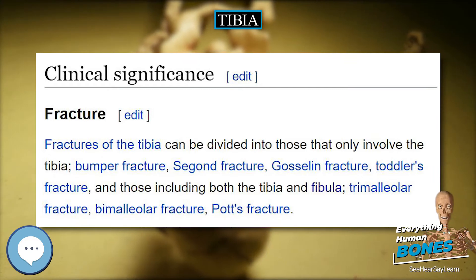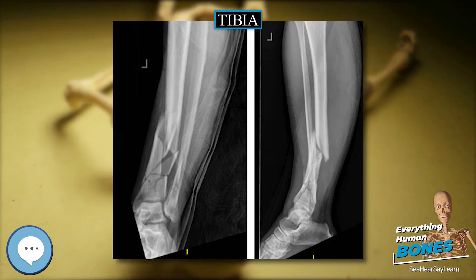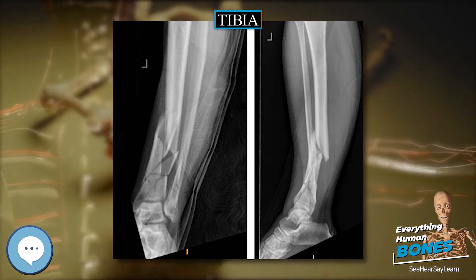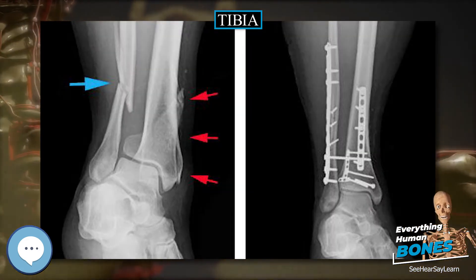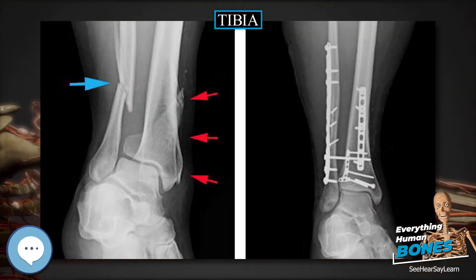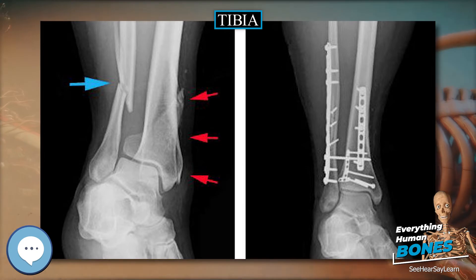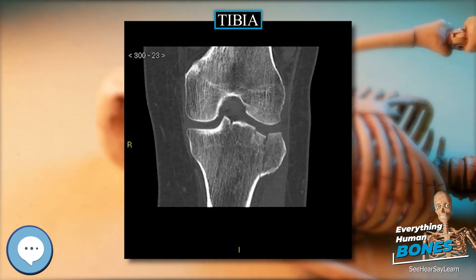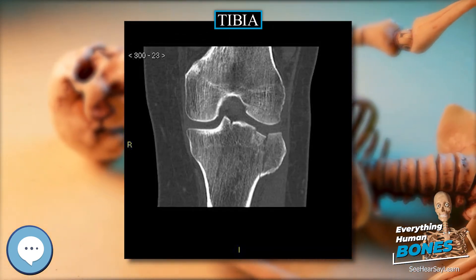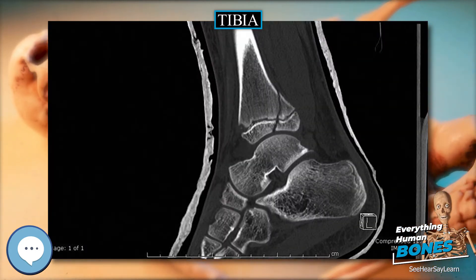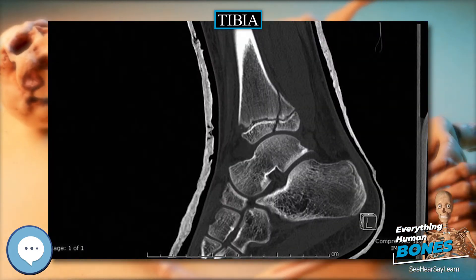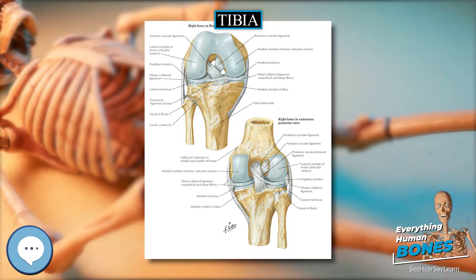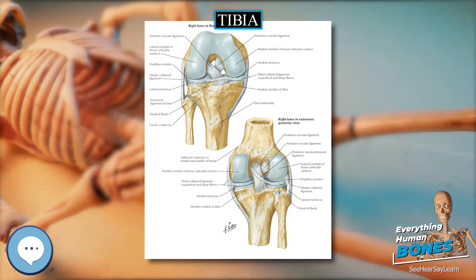Surfaces. The anterior surfaces of the condyles are continuous with one another, forming a large somewhat flattened area. This area is triangular, broad above, and perforated by large vascular foramina, narrow below where it ends in a large oblong elevation, the tuberosity of the tibia, which gives attachment to the patellar ligament. A bursa intervenes between the deep surface of the ligament and the part of the bone immediately above the tuberosity.